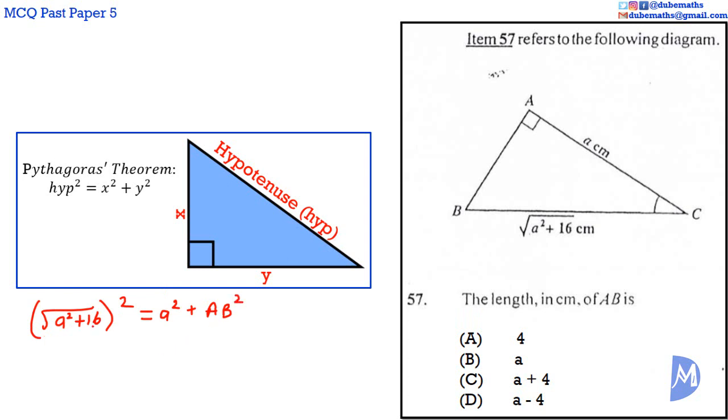The square root of A squared plus 16, squared, is equal to A squared plus 16.